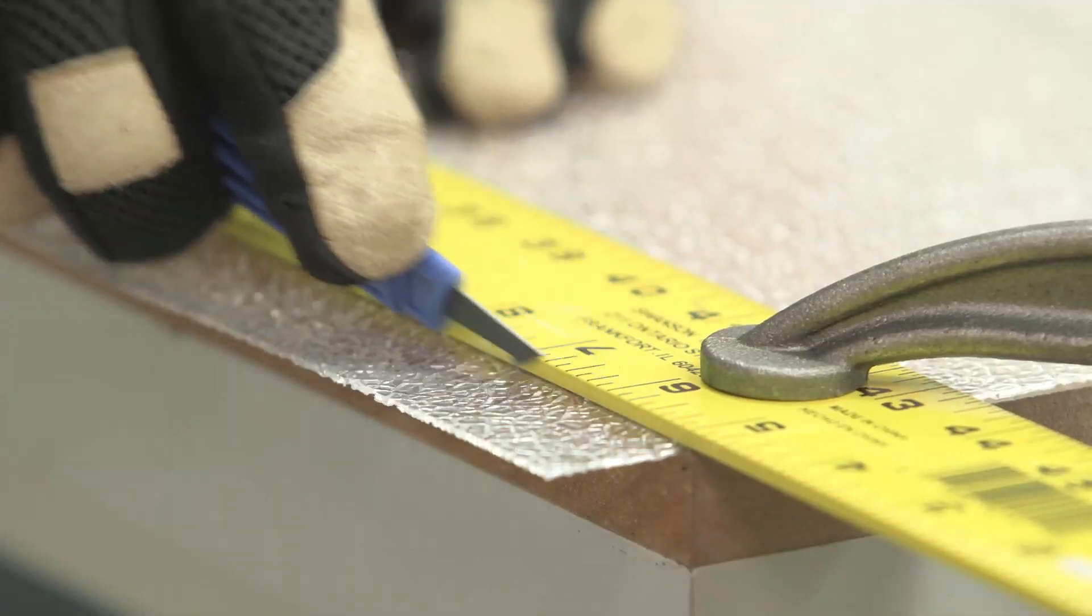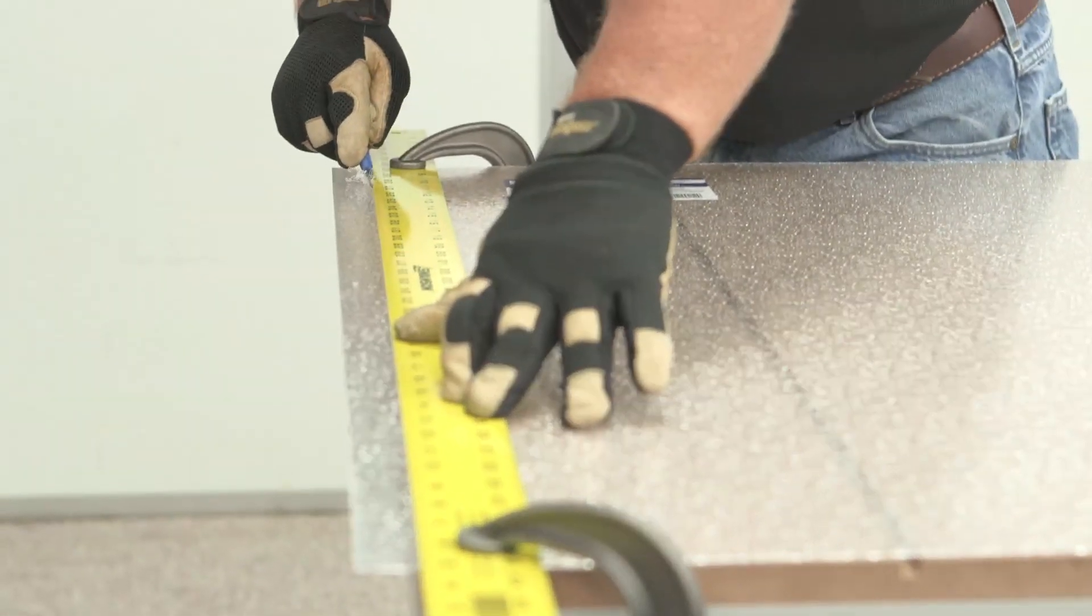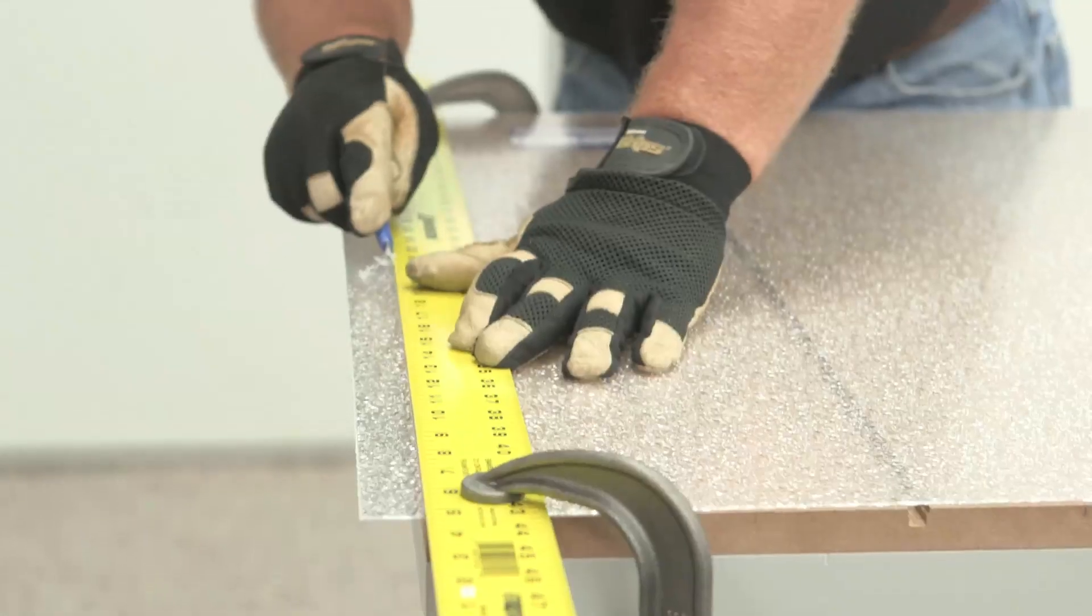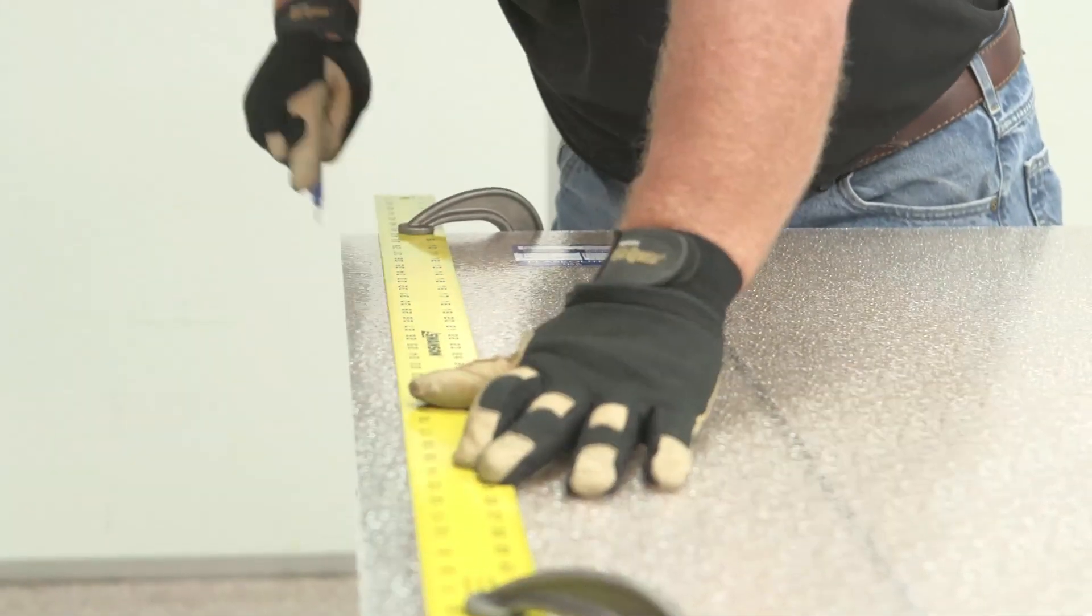Using the straight edge as a guide, draw the back point of the plastic cutter along the entire length of the panel. Repeat this process until you have scored at least halfway through the thickness of the panel.